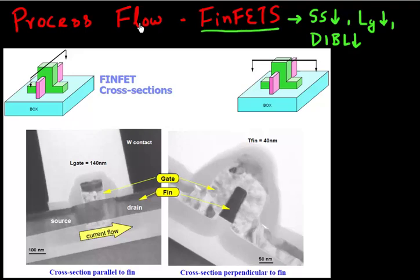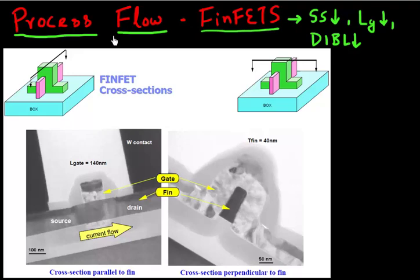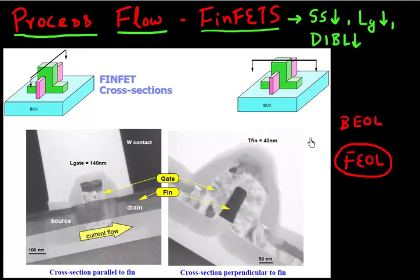What I want to do in this video and the next few videos is to talk a little bit about the process steps or the nano manufacturing steps that go into making of this FinFET device. Many of them are similar to what you have in a planar device. Most of your back end of the line flow does not change much whether you have a FinFET or a planar device. Most of your changes are located in the front end of the line flow, and I'll highlight those in these next set of videos.